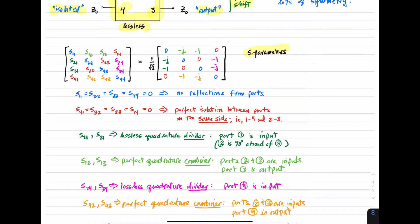Finally, S42 and S43 are S-parameters which are equal in magnitude and 90 degrees out of phase. These two S-parameters are describing the behavior as a perfect quadrature combiner, that is when signals are applied to ports two and three and port four is the output. So what we see is we have two ways to make dividers and two ways to make combiners, and in all four cases we have these 90-degree phase shifts going on.